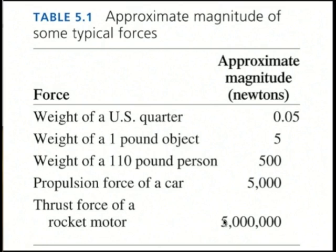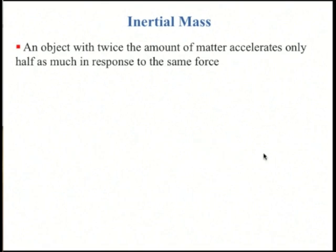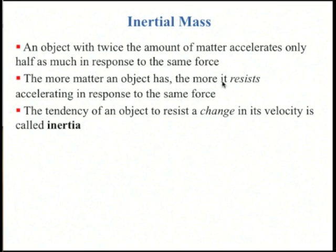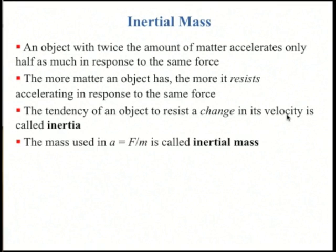A rocket can have millions of newtons of force pushing on it. An object with twice the amount of matter accelerates only half as much in response to the same force — the more matter an object has, the more it resists accelerating. This tendency of an object to resist change in its velocity is what we call inertia. The mass M in A = F/M is called the inertial mass.